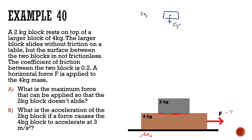For the two kilogram block: we're going to have force of gravity which is 20 newtons, force normal which is also 20 newtons, and there is going to be a force of friction. The force of friction is going to be to the right for this problem, because friction is what allows this block to move to the right. Without friction it would just slide off, so friction is what allows it to move to the right.